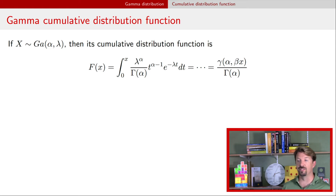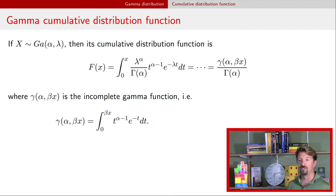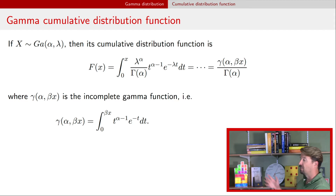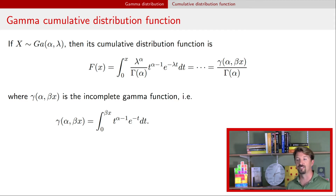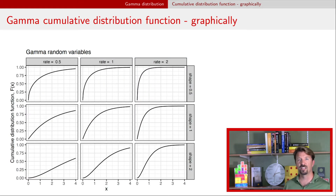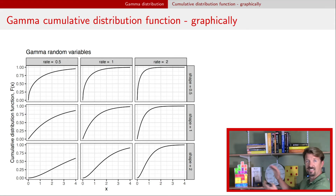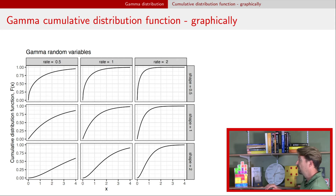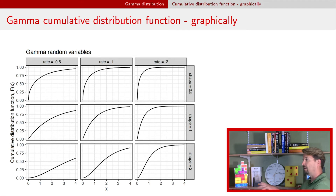We can calculate the cumulative distribution function, which has an even messier form. It has a ratio of two different gamma functions — the first in the numerator is called the incomplete gamma function, defined by a particular integral, and the denominator is the standard gamma function. Looking at some CDFs, the first six look like CDFs of exponential distributions. The bottom three have a sigmoidal curve shape, where the inflection point depends on the values of those parameters.